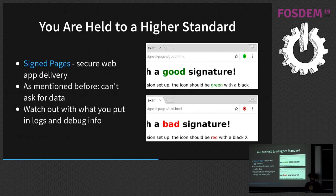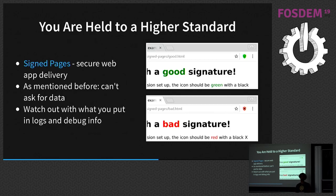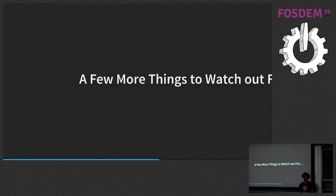The developer signs the page — you can do this for blogs too, not just web apps — and the plugin will verify it, showing either a good signature or a bad signature alert, and can block loading of the page accordingly. This is something our users expect from us. And as mentioned, you can't ask for data — that's part of who you are. Also, watch out for what you put in logs and debug information: don't leak any information there.